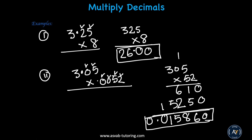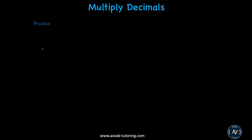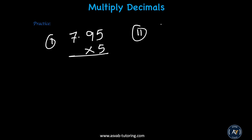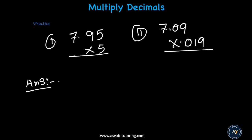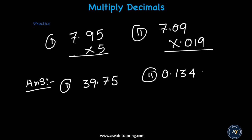I hope you understand. Let's do some practice problems you can try by yourself. Number 1: 7.95 times 5 — the answer is 39.75. Number 2: 7.09 times 0.019 — the answer is 0.13471.